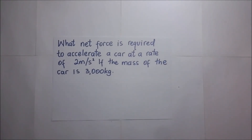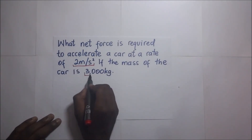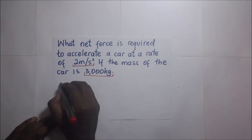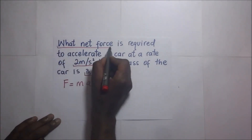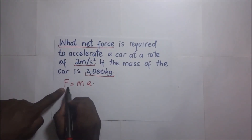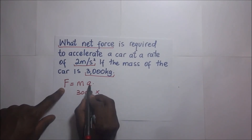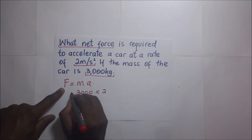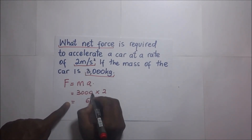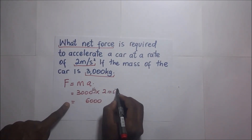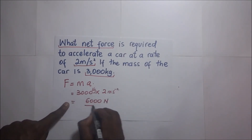Example 1: What net force is required to accelerate a car at a rate of 2 meters per second squared if the mass of the car is 3,000 kilograms? Using F = ma: force equals 3,000 kilograms multiplied by 2 meters per second squared, giving us 6,000 Newtons. Note that for the answer to be in Newtons, mass must be in kilograms and acceleration must be in meters per second squared. If given in other units, convert first.